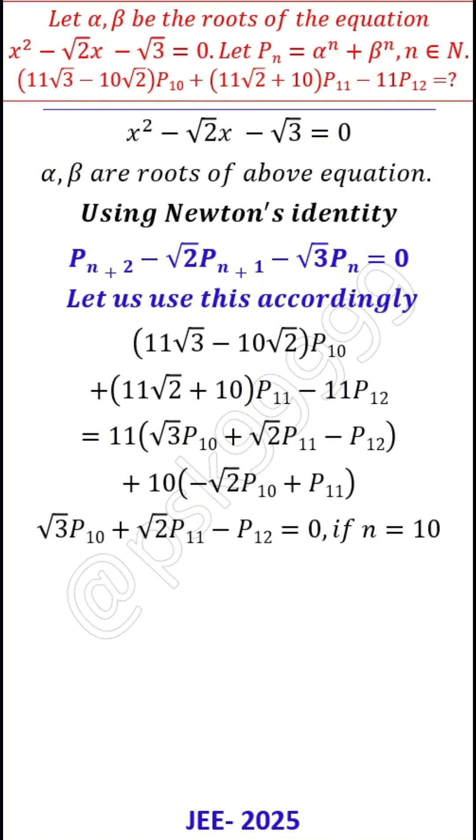If I take n equal to 10 in Newton's identity, the expression becomes √3P_10 + √2P_11 - P_12 = 0. How did I get this?